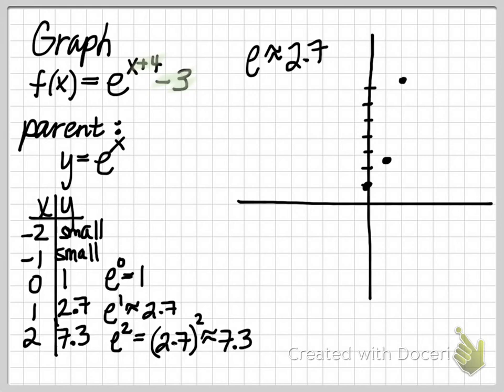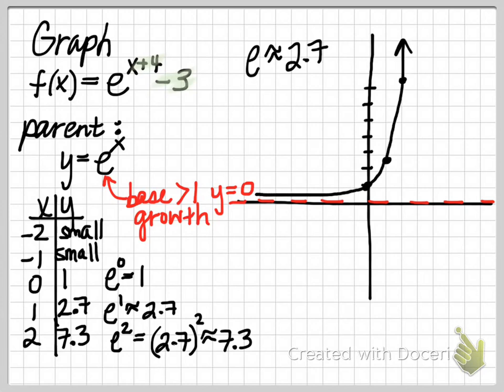And since the base is e, and remember our base here is approximately 2.7, and since that base is greater than 1, then we expect this parent function to be an exponential growth function, which means it has all the characteristics of a regular exponential function. That means it has a horizontal asymptote. So we'll graph in the horizontal asymptote, which right now is the horizontal line y equals 0. And then this function hugs the asymptote, it's very close to the asymptote, and then it grows exponentially. So this is the typical shape of exponential growth.